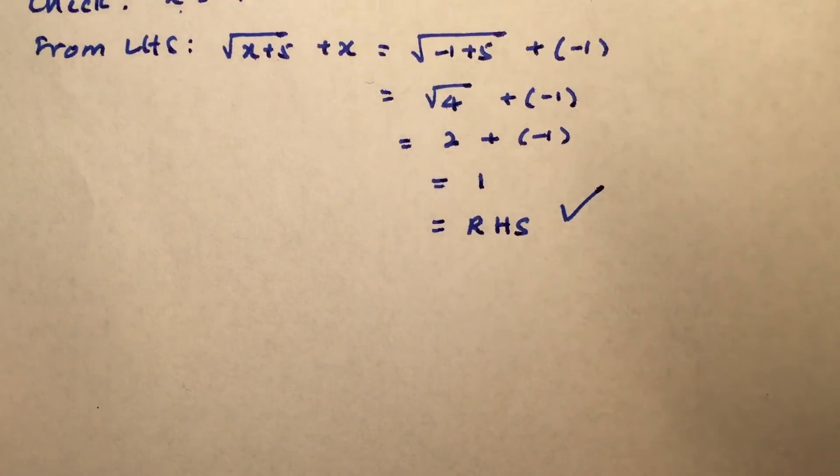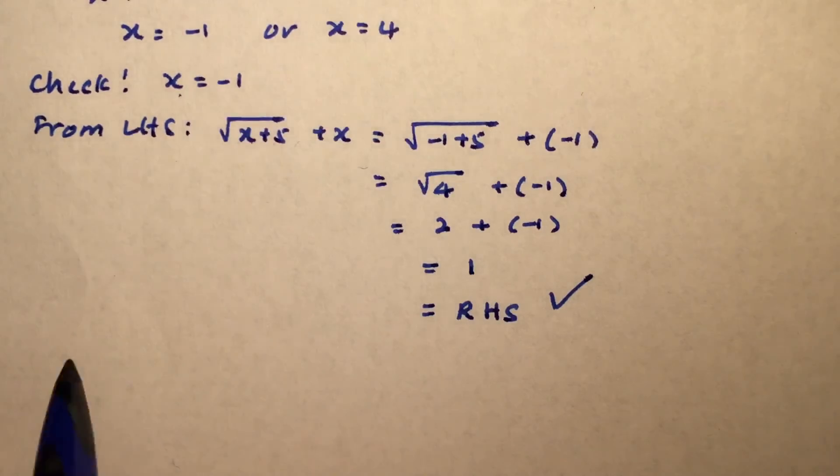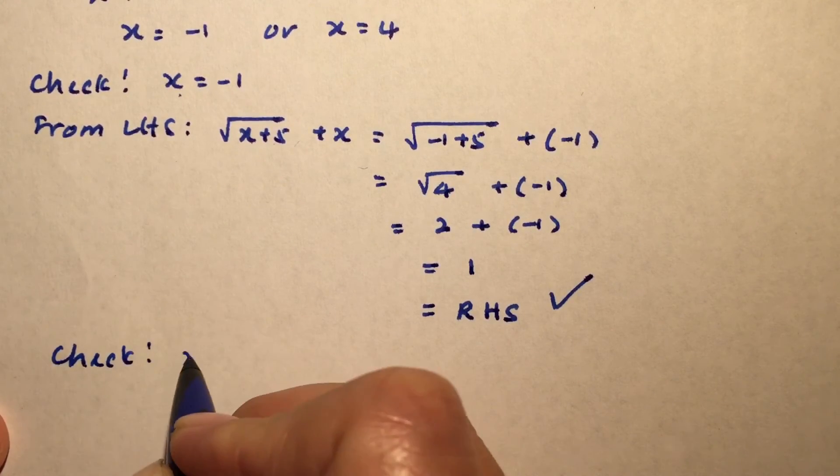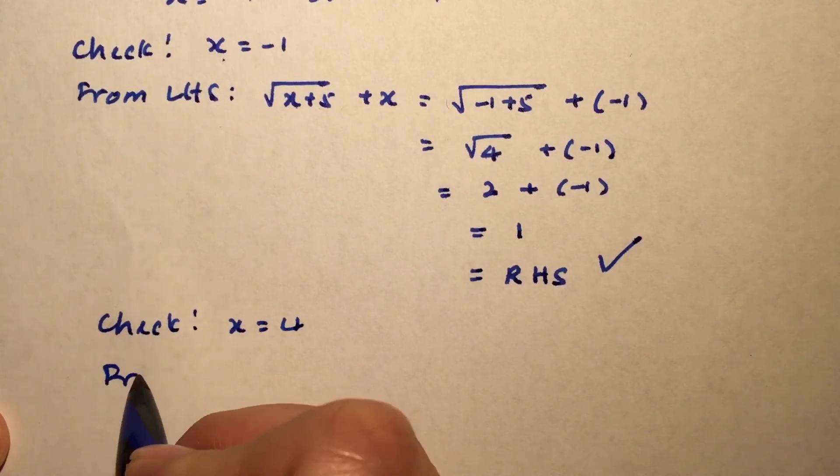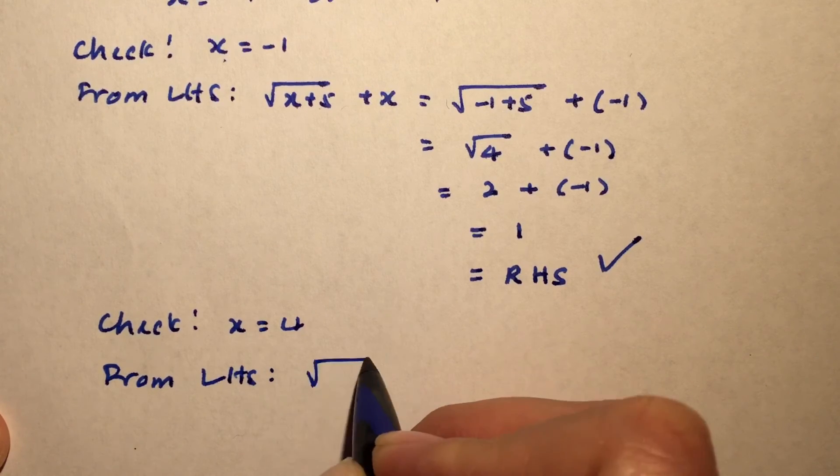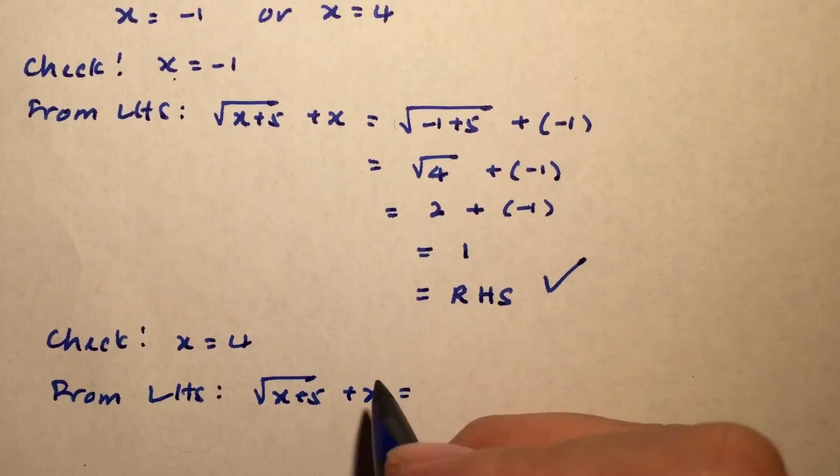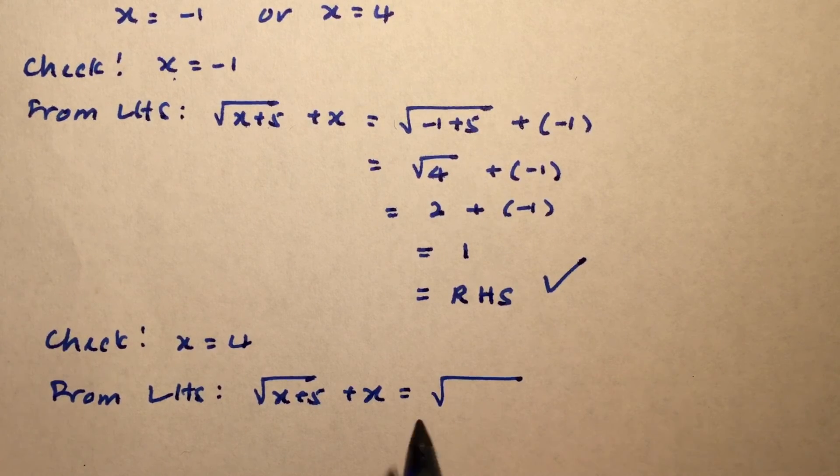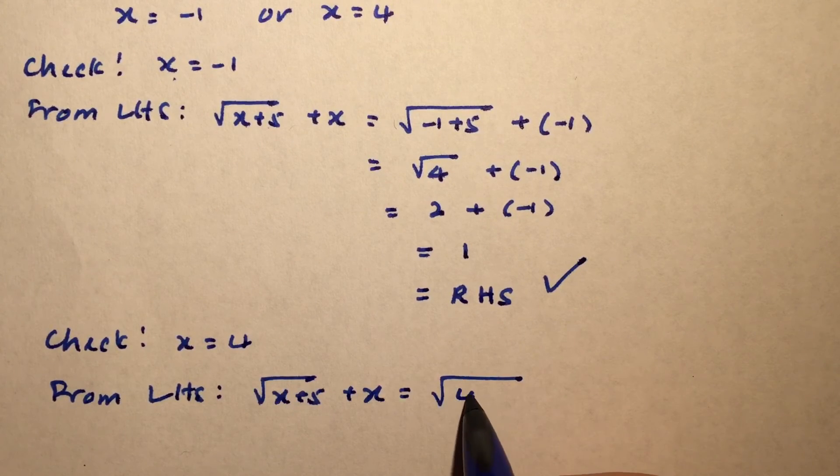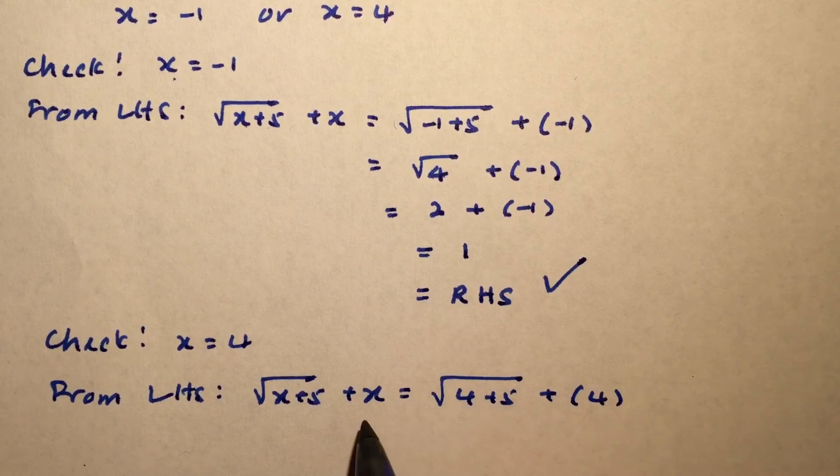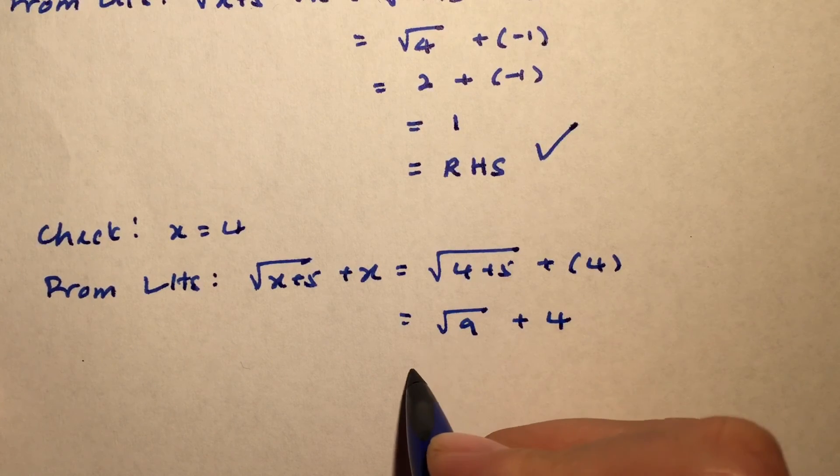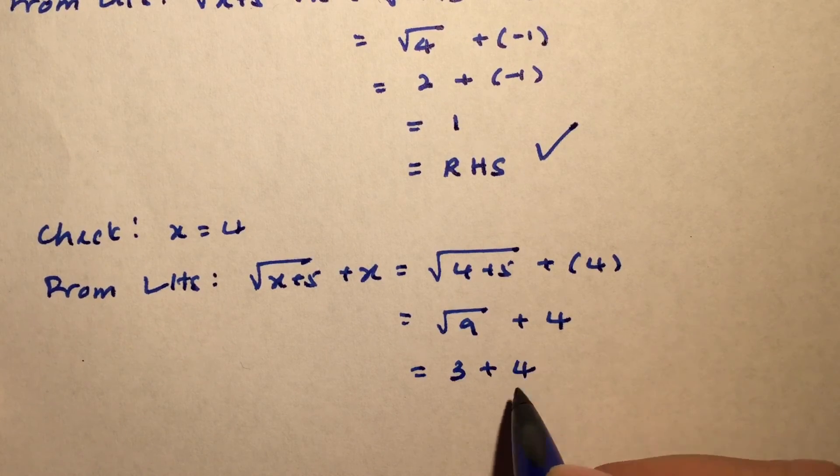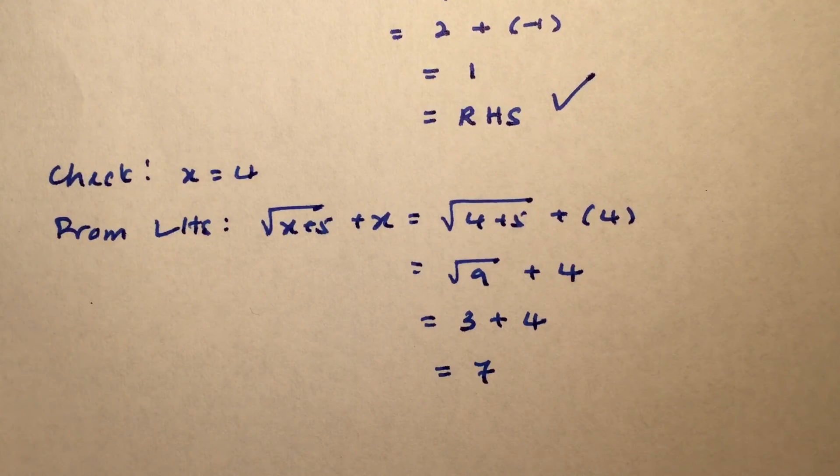Let's check the other possibility, which is x equals to 4. Check. x equals to 4. We're going to start from the left-hand side. From left-hand side, we have x plus 5 plus x. We're going to replace every x value that we see with 4. We have 4 plus 5 plus 4. 4 plus 5 will give me 9. Square root 9 will give me 3. And 3 plus 4 will give me 7. Oh, dear. It's not the same as 1, which is the right-hand side. Which means that for this value, this is not valid.